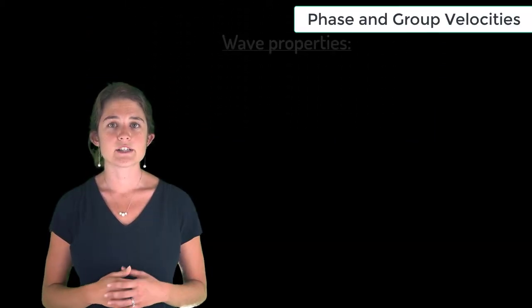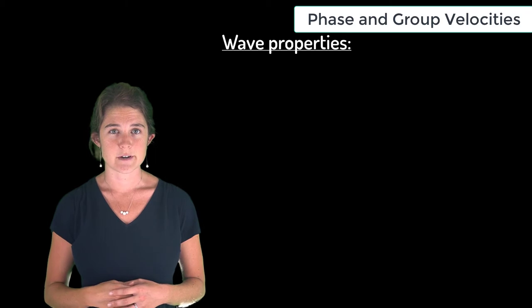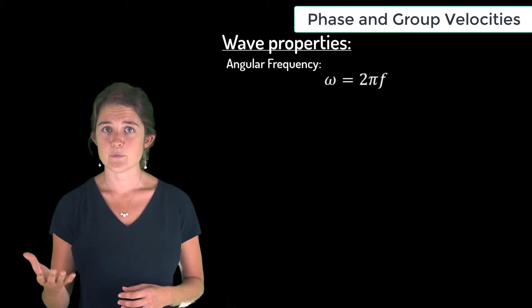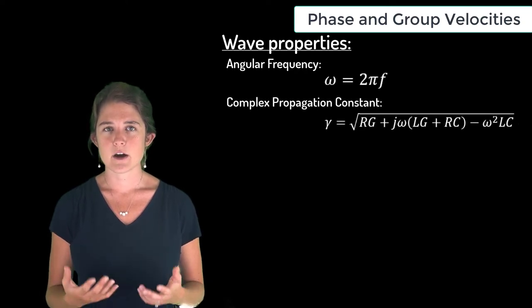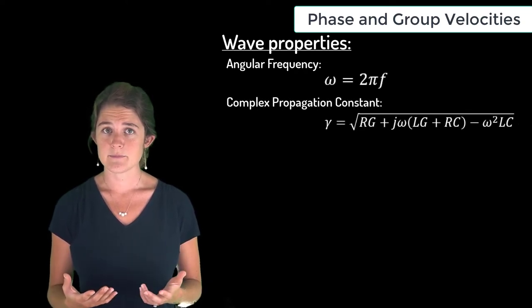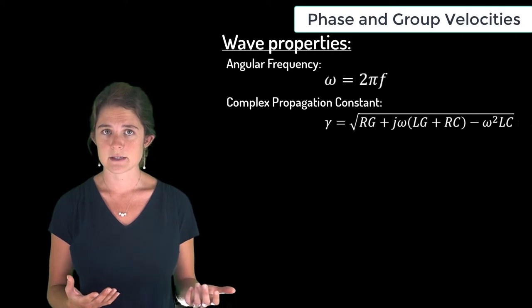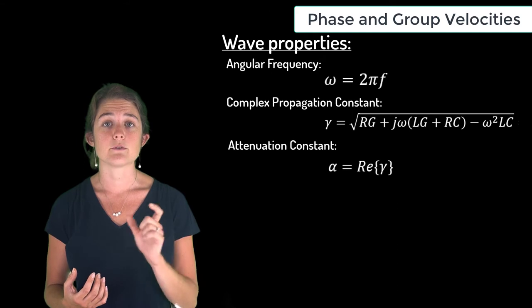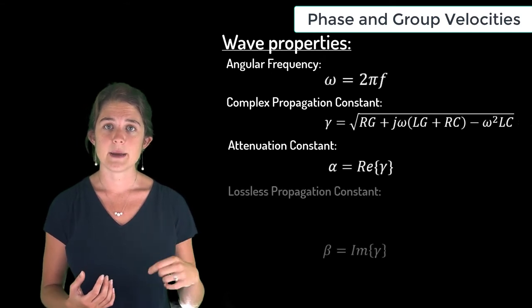Let's take a moment here to summarize the wave properties we've encountered so far. We have angular frequency of a wave, omega, which is 2π times its frequency. We also defined the complex propagation constant, gamma, in terms of the line characteristics and introduced alpha, the attenuation constant, which is equal to the real part of gamma.